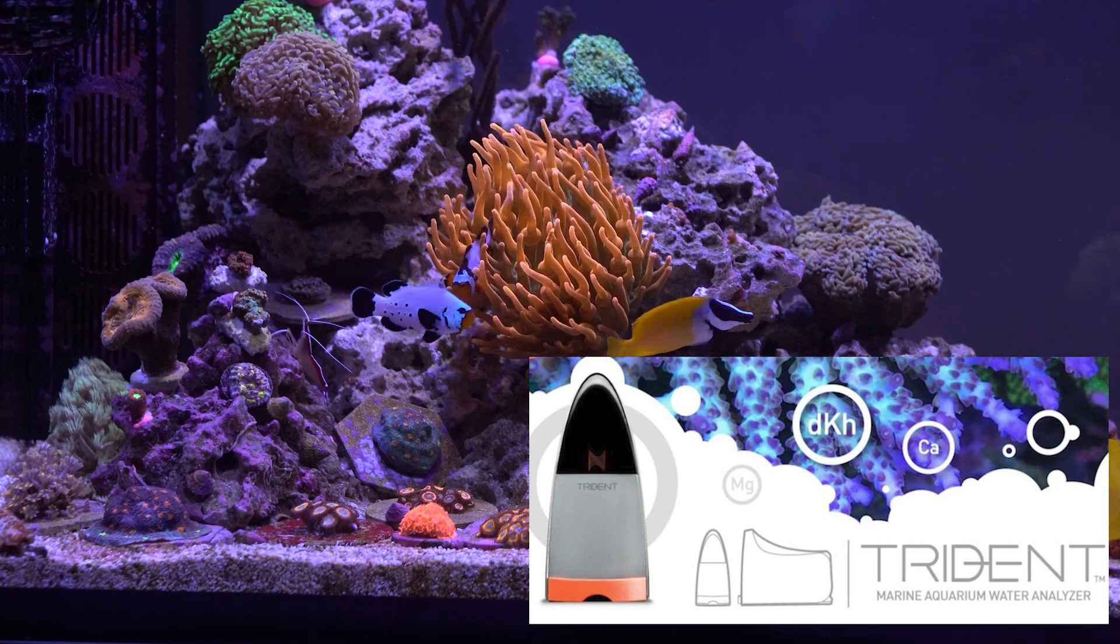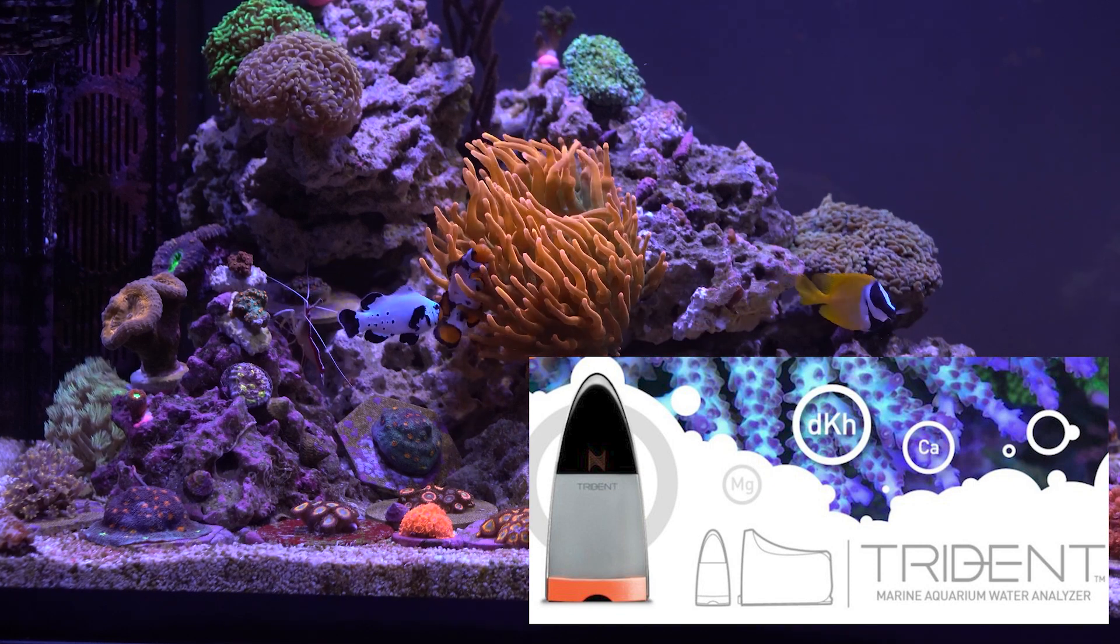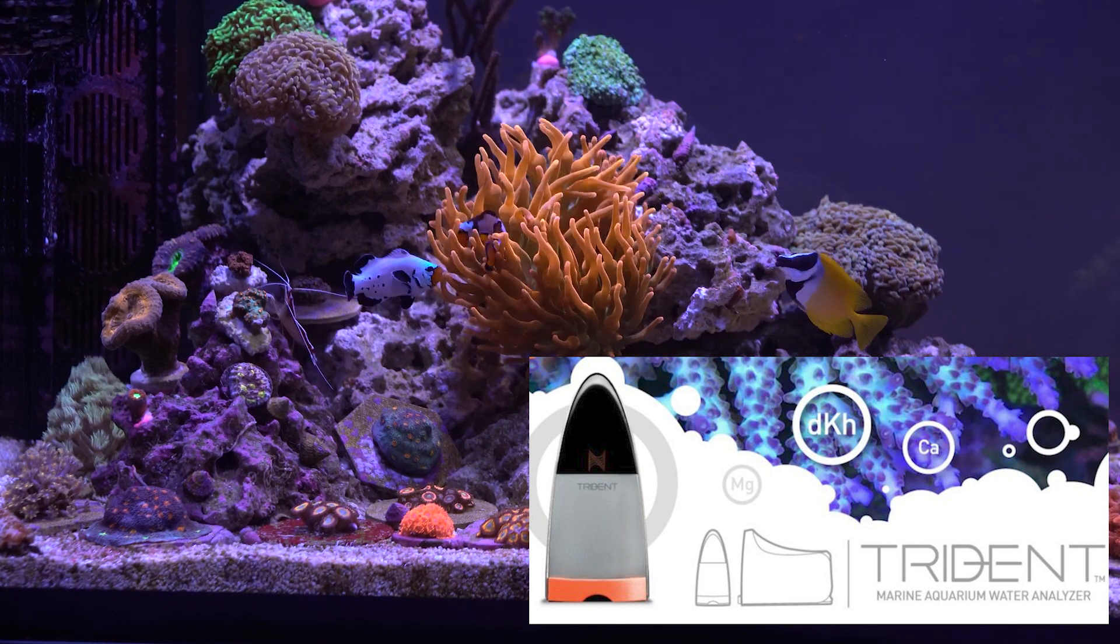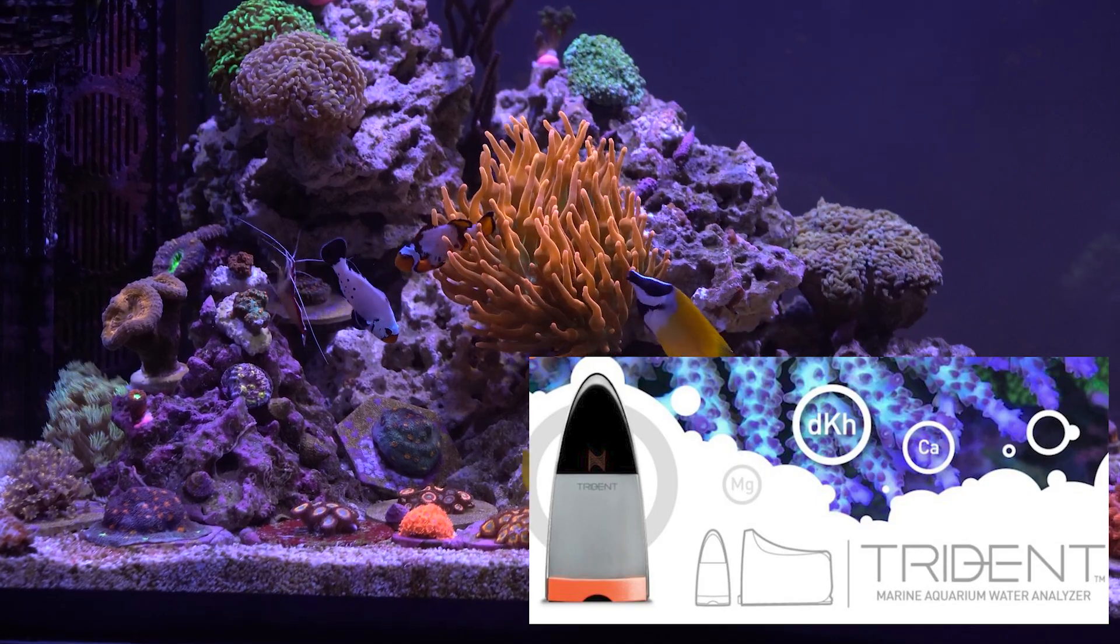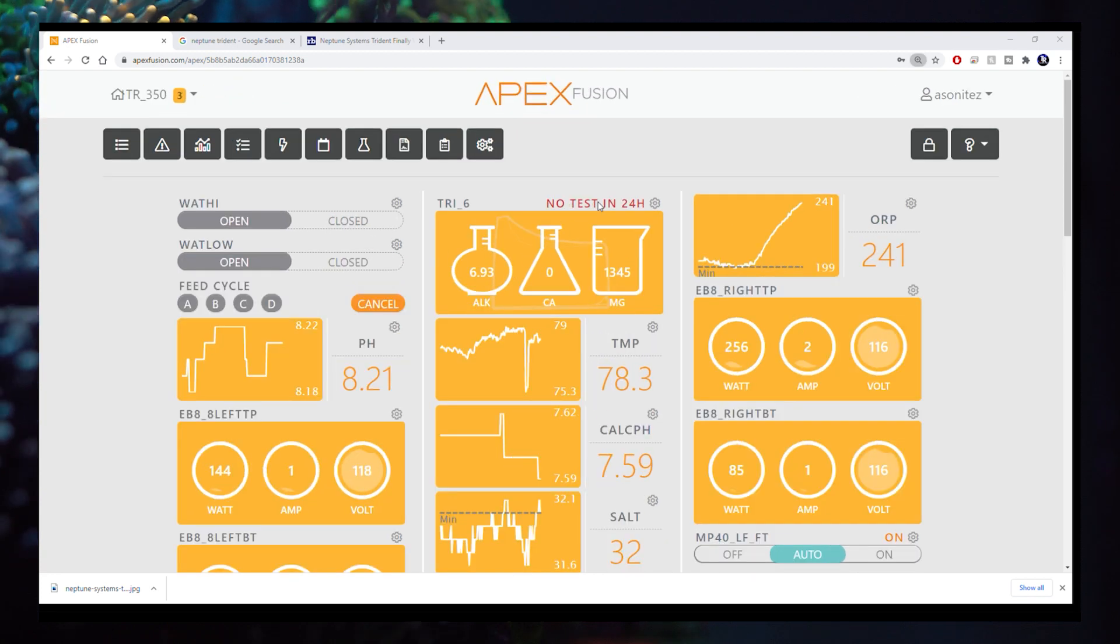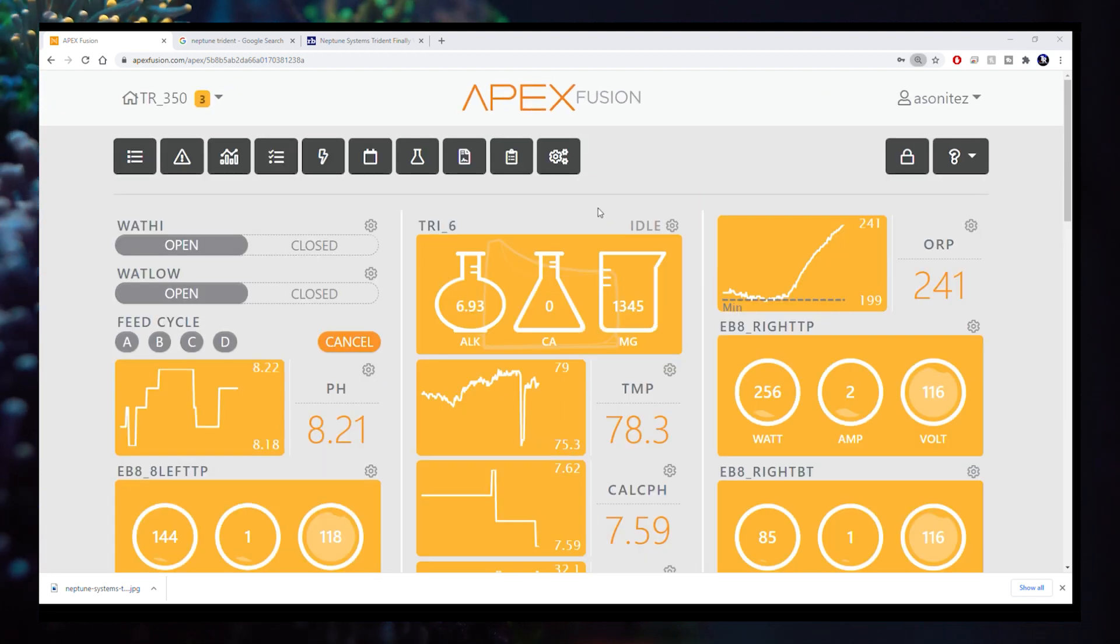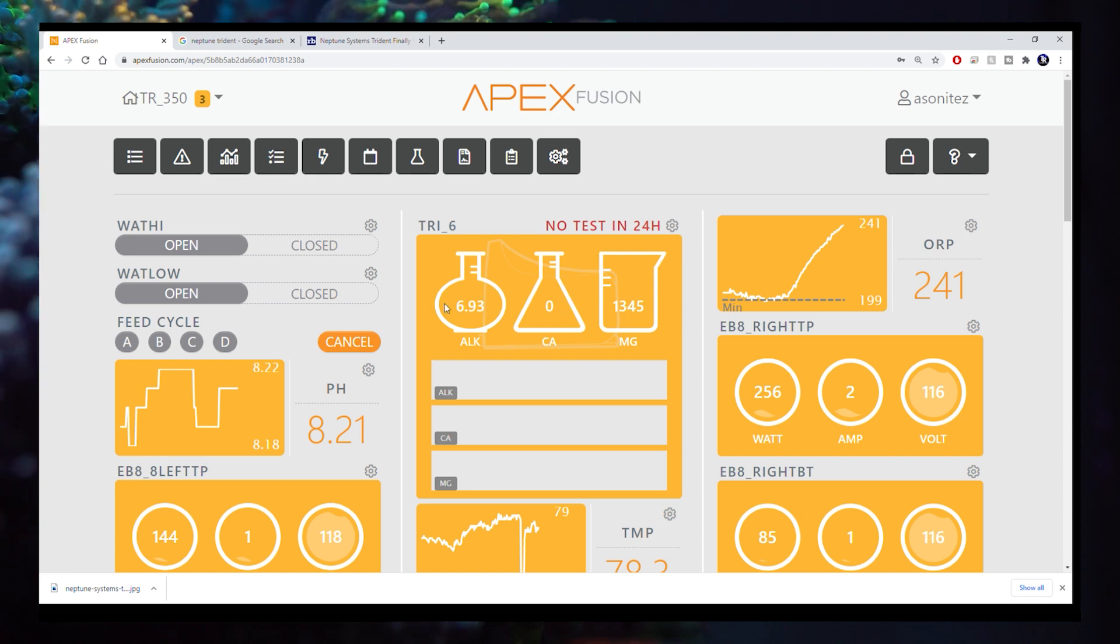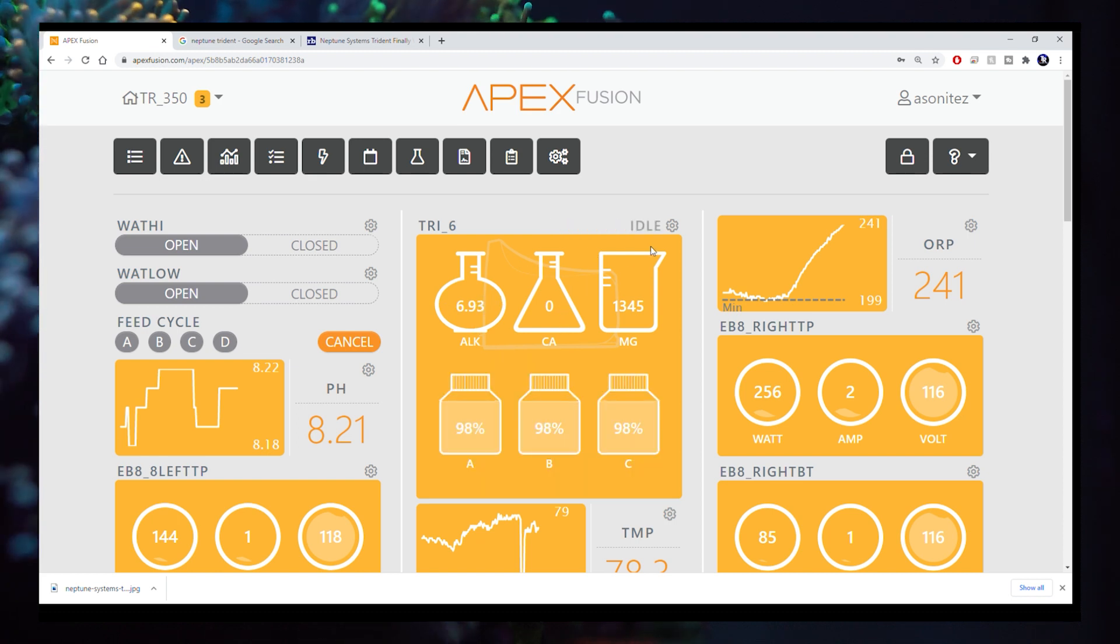So a few weeks ago my Trident started giving me some messed up readings. Namely, it started not giving me any tests at all. Since it's relatively new, breakdowns of the unit and repair tips were kind of few and far between. At least I didn't really see anything on Google or any of the reef forums that I usually frequent.